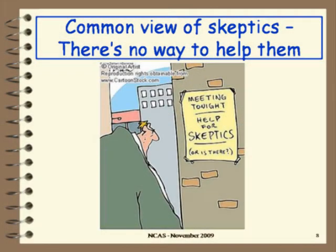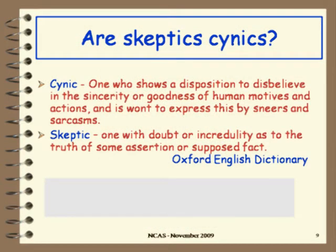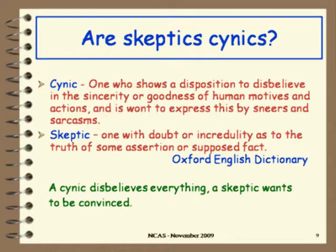I'm going to spend a little time talking about general skepticism. If you've been around NCAS for 10 or more years, you've seen some of these slides from talks I've given before — I'm very good at recycling. The common view of skeptics is that they're a bunch of people that can't be helped. But are skeptics cynics? A cynic is one who shows a disposition to disbelieve in sincerity or goodness of human motives. A skeptic is one who holds doubt or incredulity as to the truth of some assertion or supposed fact. A big difference: a cynic disbelieves everything; a skeptic wants to be convinced.